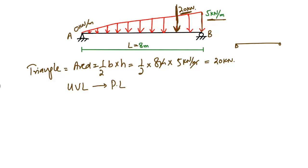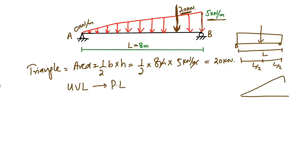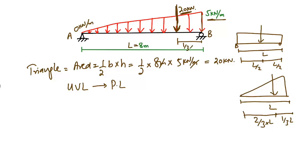For a rectangular or uniformly distributed load, the load acts at L/2 from each end. But in our case it's a triangular load. For a triangular load, keep in mind: the resultant load always acts at 2/3 of L from the zero-load end and 1/3 of L from the maximum-load end. So from support B, the distance is 1/3 of L = 1/3 × 8 meters, and from the other end it is 2/3 of L = 2/3 × 8 meters.